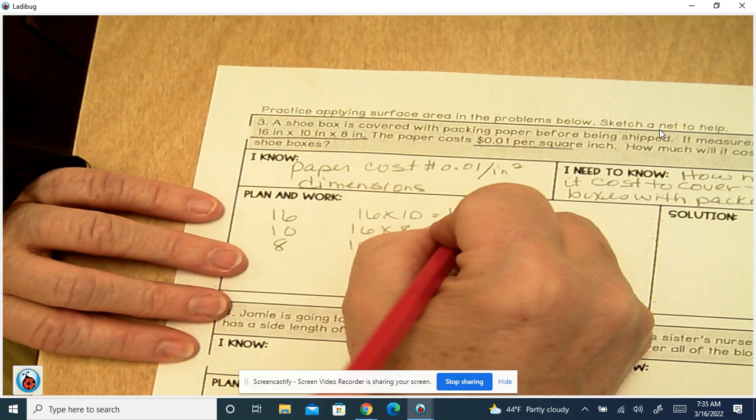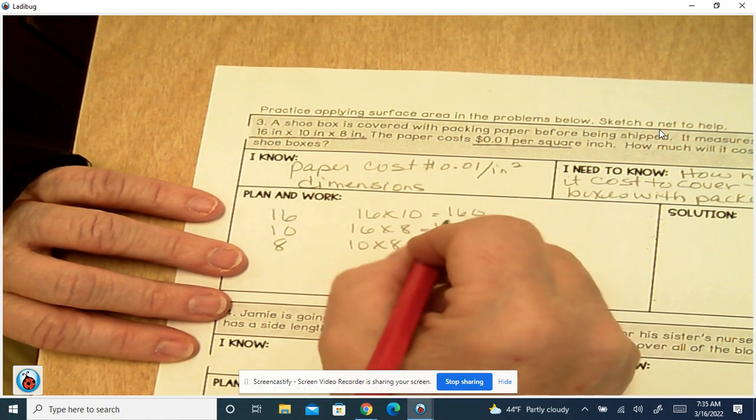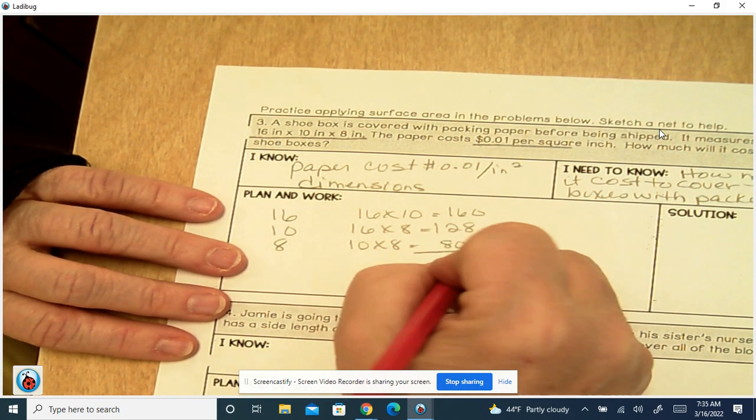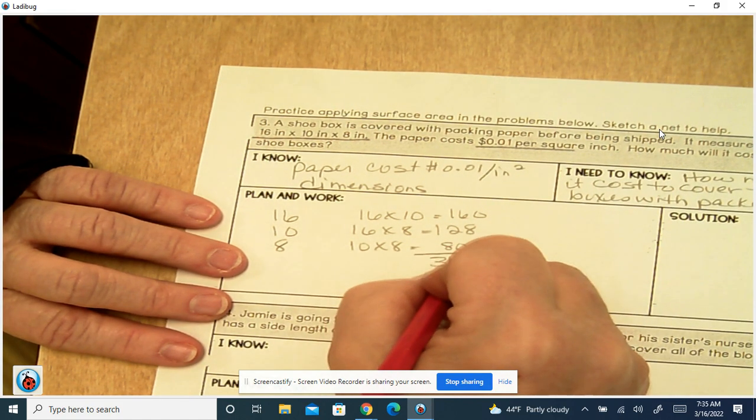So we've got 160, 128, and 80. We'll add those together. We get 368.